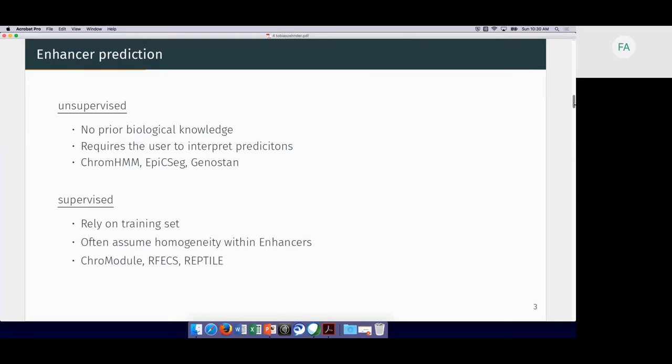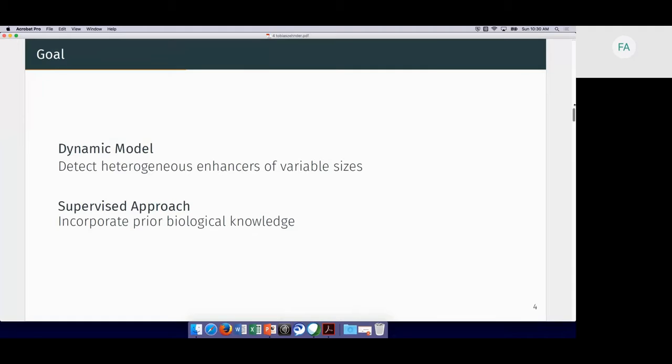In the case of supervised methods, they usually rely on labeled training sets, so we need to have some subset of enhancers where we are sure that they are enhancers. We've seen that such methods often assume homogeneity within enhancers, which contradicts our understanding of these very heterogeneous regions. This is why we came up with the goal of using a supervised approach that incorporates prior biological knowledge into a dynamic model that is able to detect heterogeneous enhancers of variable sizes.